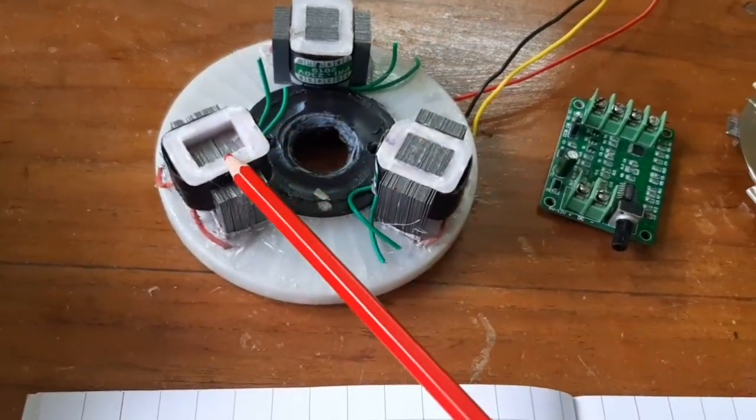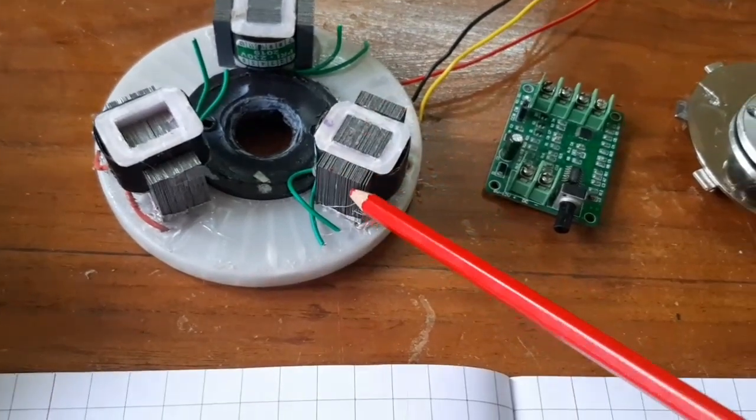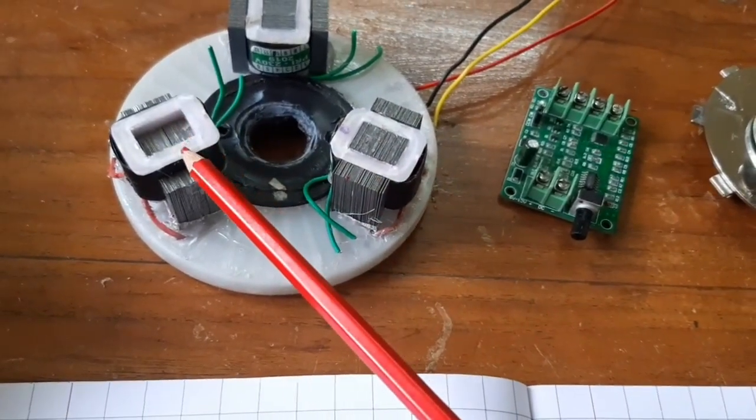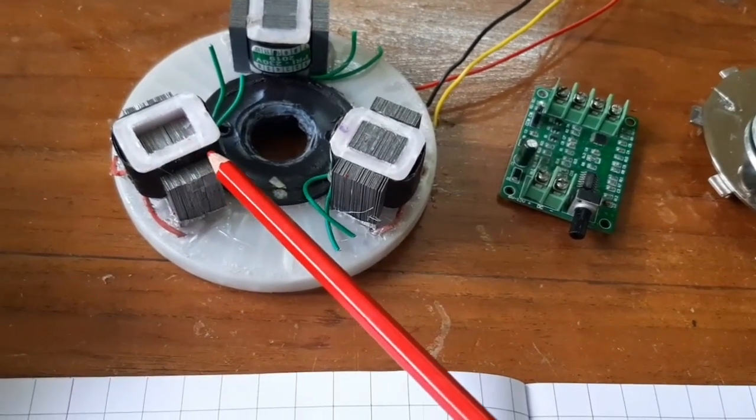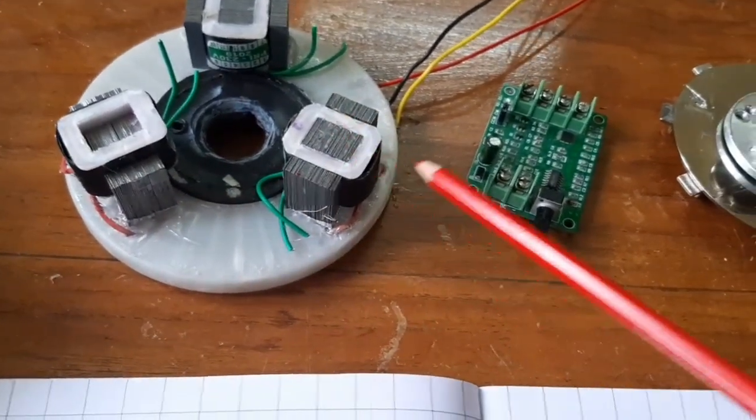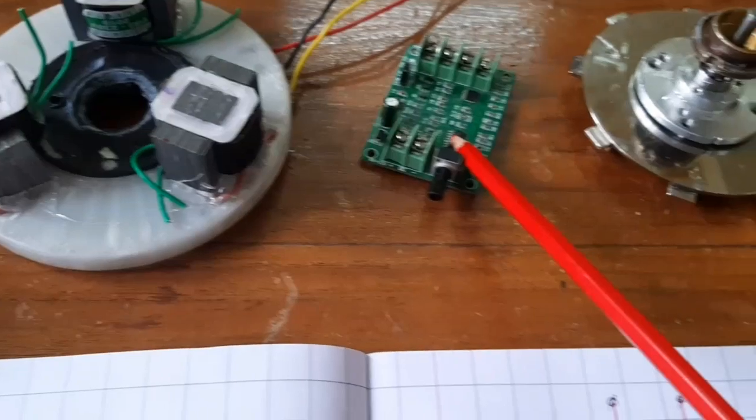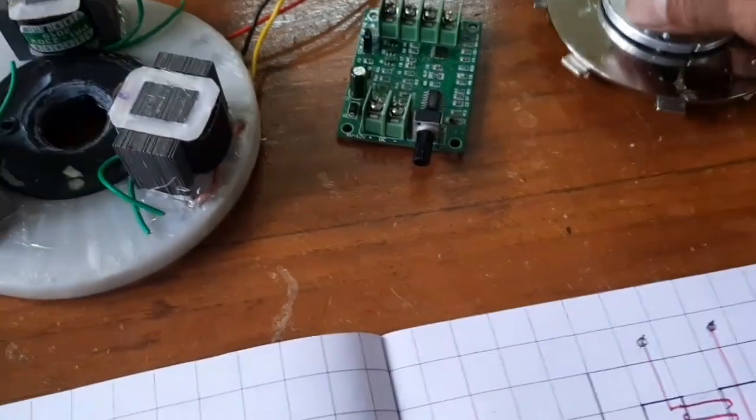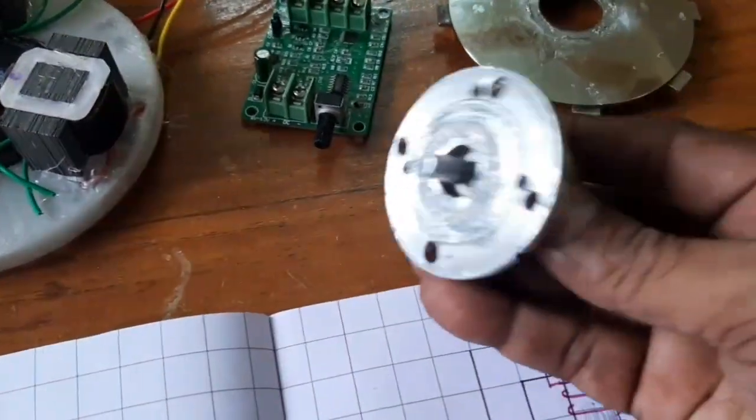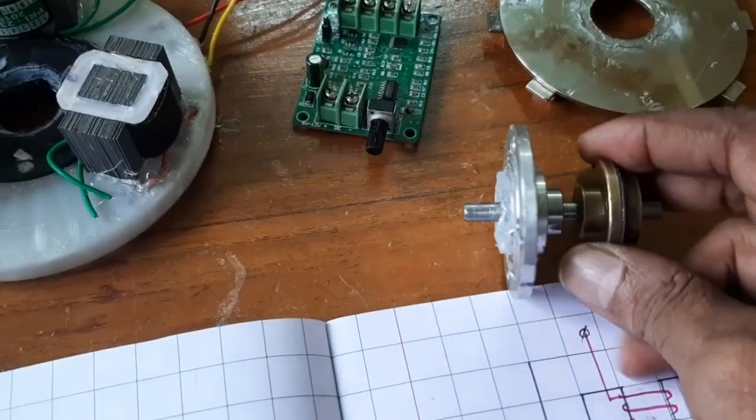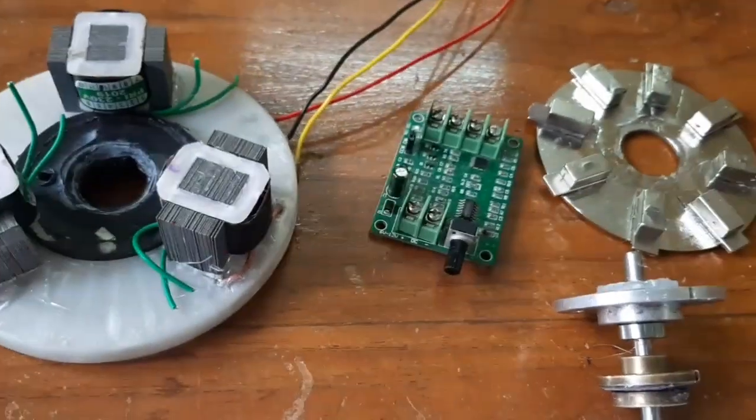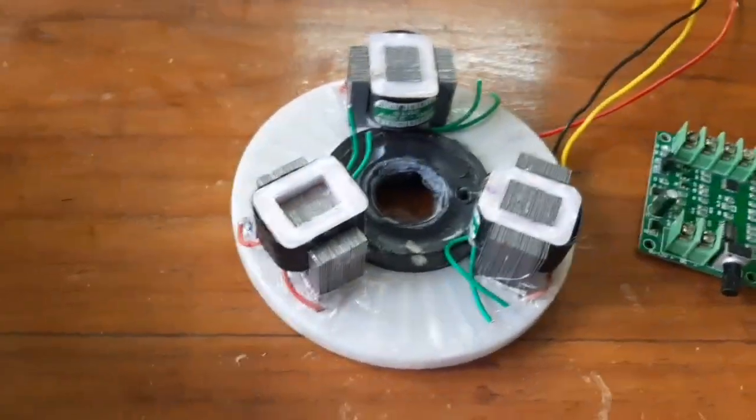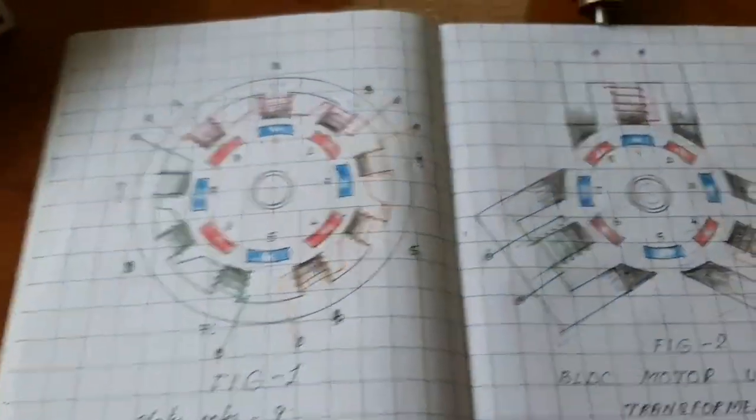Here are the components: three transformers, 230 volt with 6-0-6 output at 300 milliamps. You need a BLDC controller, bearing attachment, and this is the rotor. Before assembling the motor, look at the drawing.